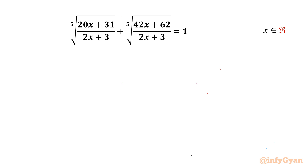Welcome back to InfiGam, my dear friends. In this video we have another very interesting question from Radical Equations. It is the 5th root of (20x + 31)/(2x + 3) plus the 5th root of (42x + 62)/(2x + 3), equal to 1. We are going to calculate real solutions only.